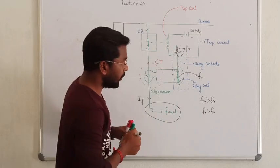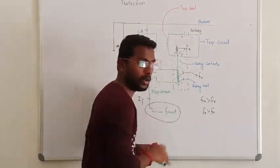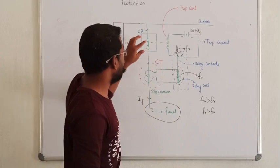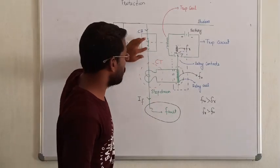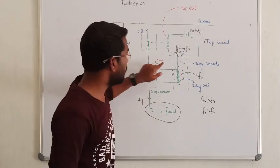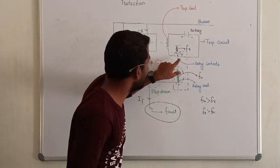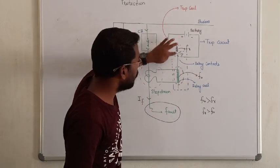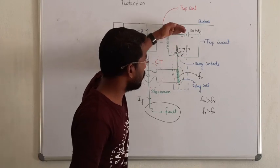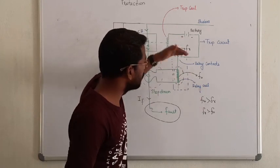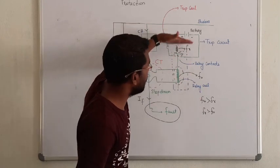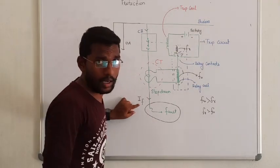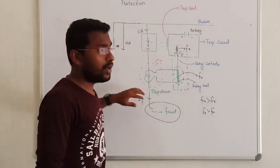Okay, so in this case, the circuit is in a normal condition. The relay keeps the circuit breaker closed. This is an open circuit. Then the restraining force value and the operating force are the same. The contact remains the same — this is the normal operating condition.